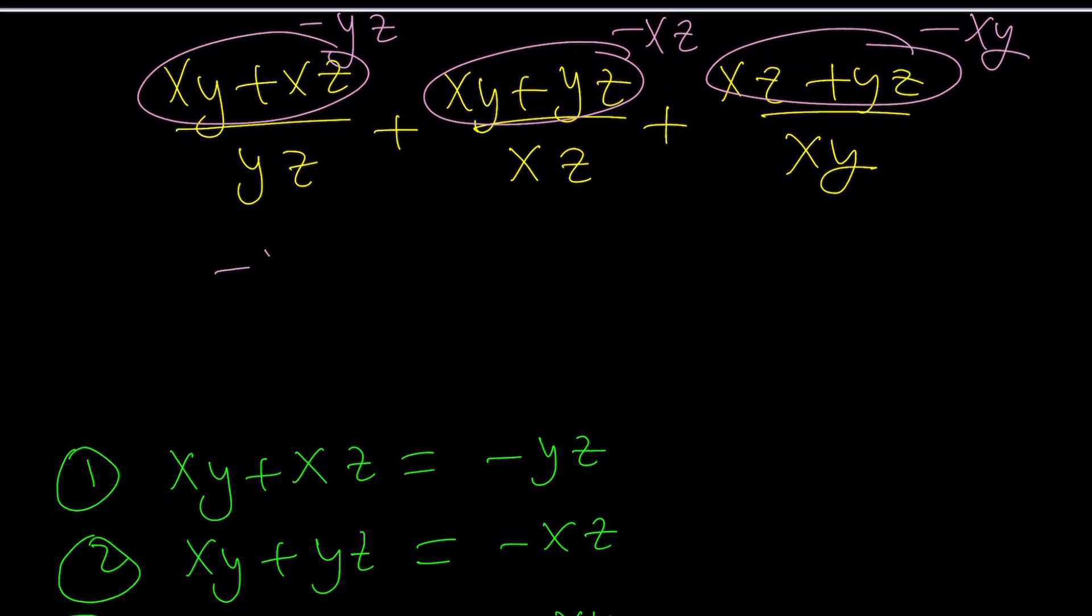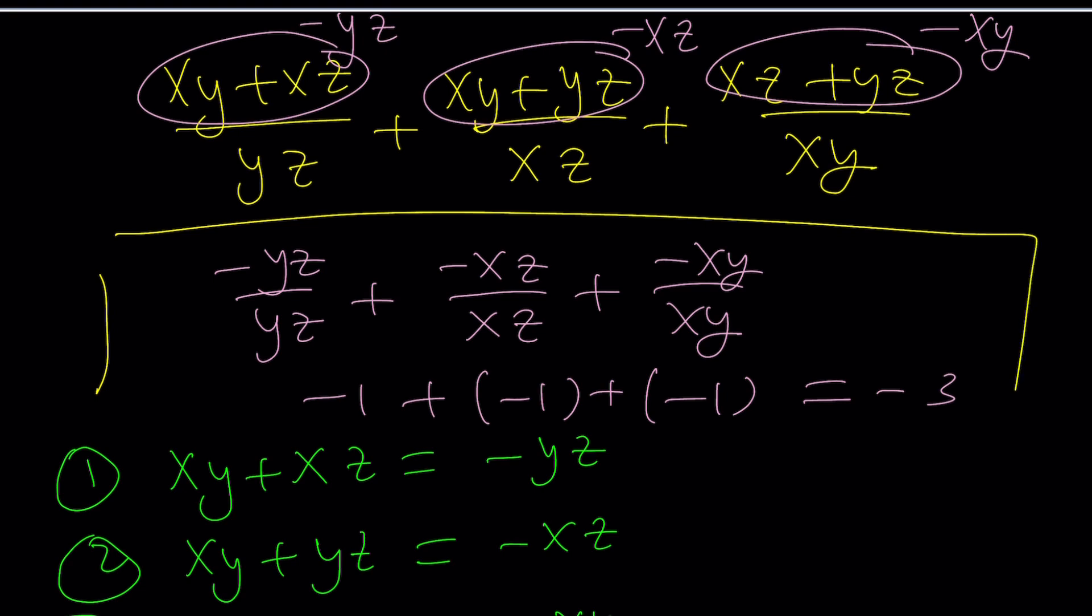That should give you negative yz over yz plus negative xz over xz plus negative xy over xy. And that'll give you negative 1 plus negative 1 plus negative 1, which is negative 3, which is what we found earlier with the second method.